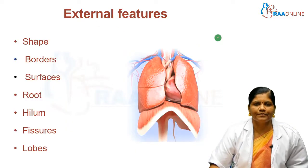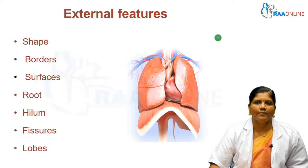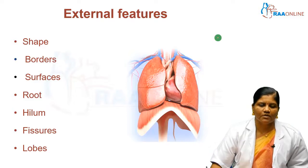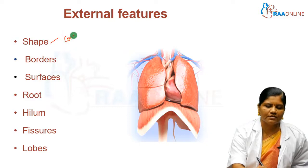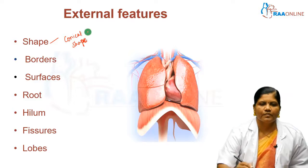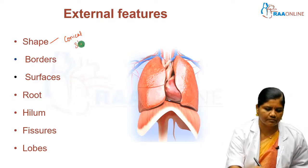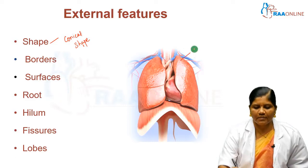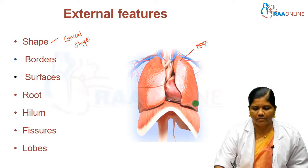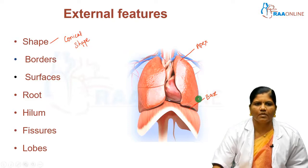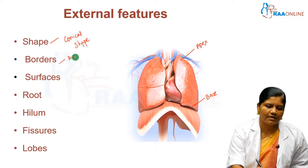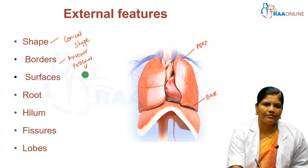The external features of the lung will be discussed under the following subheadings: shape, borders, surfaces, root, hilum, fissures, and lobes. The shape of the lung is semi-conical or conical. It has an apex and a base, and three borders: anterior border, posterior border, and inferior border.